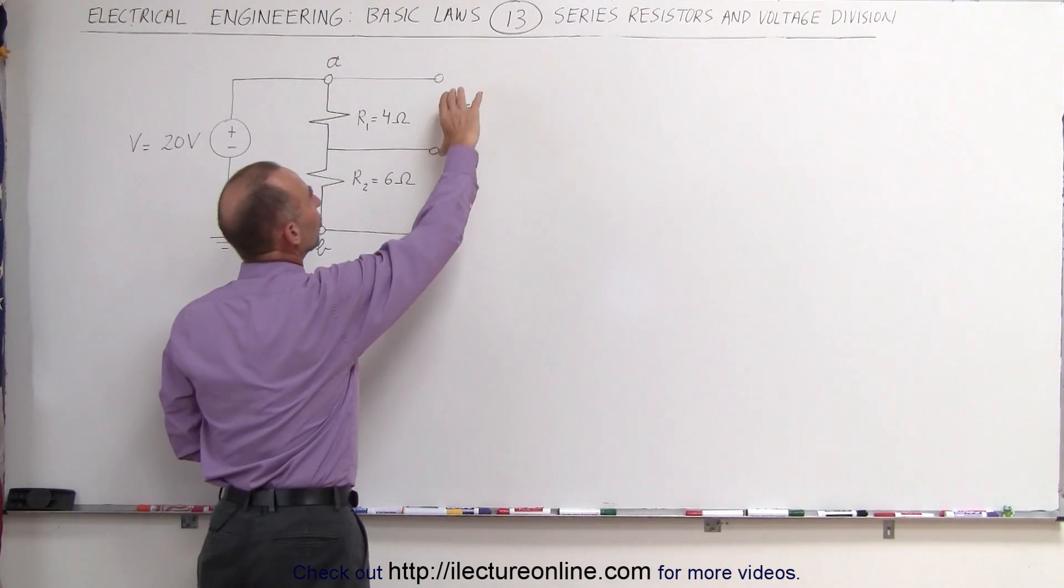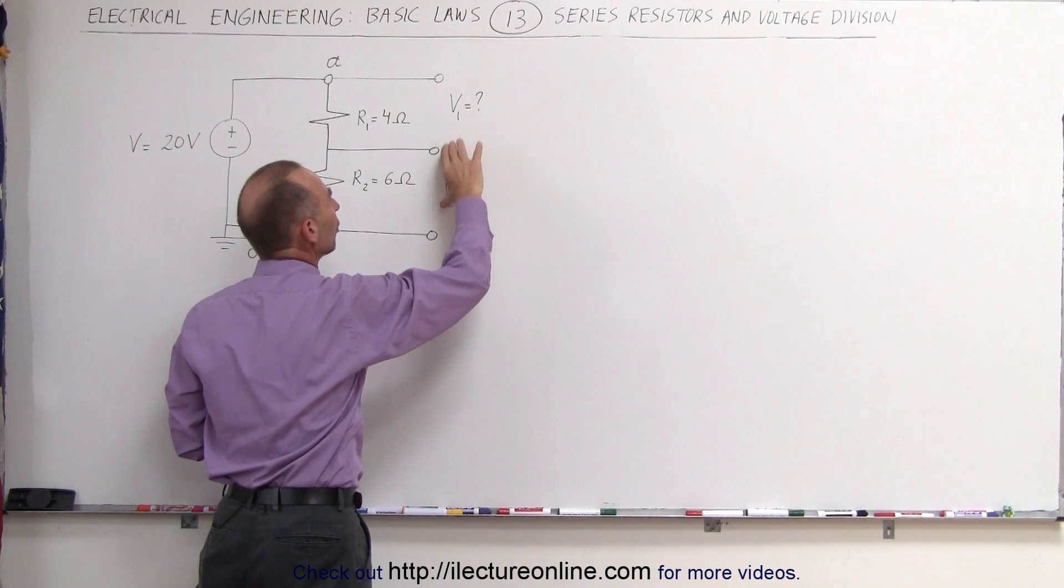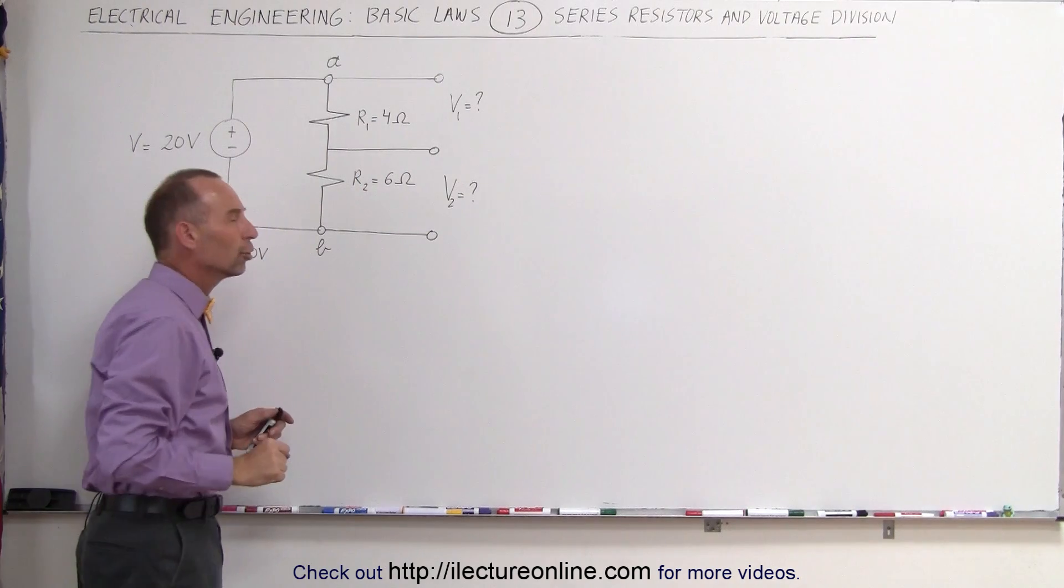And now what we're trying to determine is what is the voltage drop across V1 and what is the voltage drop across V2. V1 is the voltage drop across R1 and V2 is the voltage drop across R2.